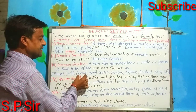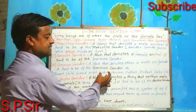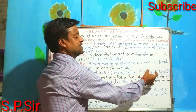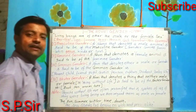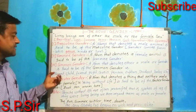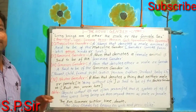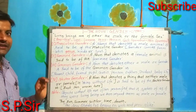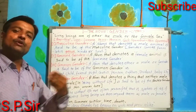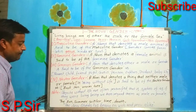Friend is also common gender, along with cousin, person, orphan, student, and baby. So common gender refers to a noun that is used for both male and female. Whatever noun is used for both — that is common gender.